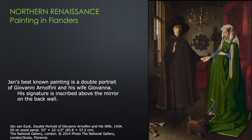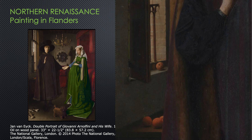A lot of people think she looks pregnant here. My belief is that she is not pregnant, but this is a wish for fertility and children in the marriage — she's symbolizing that by lifting up her skirt and gathering it over her stomach. The apples on the windowsill have a double meaning: they remind us of Adam and Eve in the garden of Eden, but also symbolize fertility.